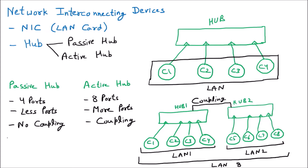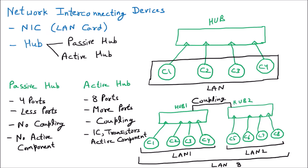In the passive hub there are no active components — you just purchase it, install it, and work with four ports; no programming is needed. But in the active hub, coupling requires active components such as ICs and transistors. Decision-making during coupling is handled by these active components, which is why it's called an active hub.